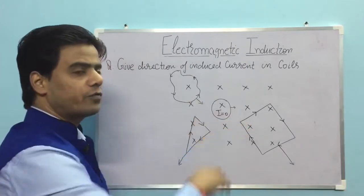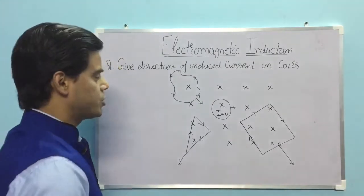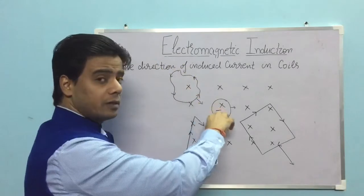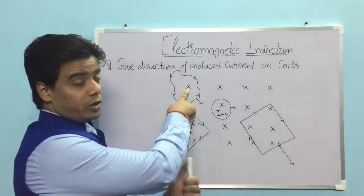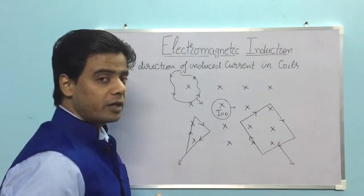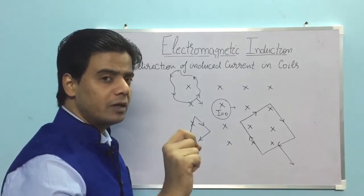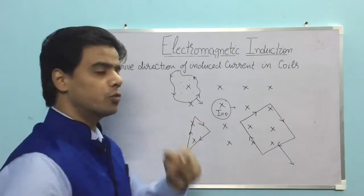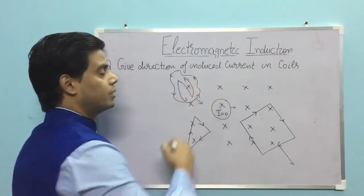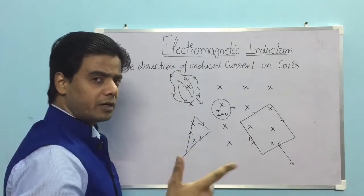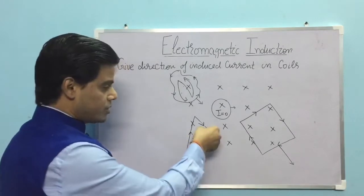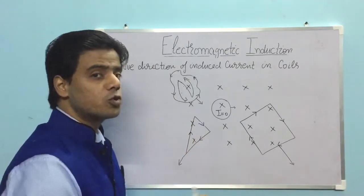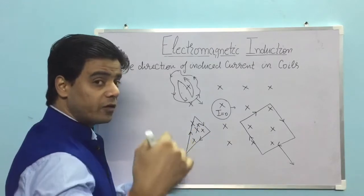Now determine the direction of induced current using Lenz's rule. For the coil moving into the crossed-field region, the cause is an increase in the crossed (into-page) magnetic field. To oppose this, the coil will try to create a dot (out-of-page) magnetic field. A dot field means field coming toward the observer, which corresponds to north polarity, and north polarity corresponds to anticlockwise current — matching what we got from Fleming's right-hand rule. For the triangular coil moving out, the cause is a decrement in the cross field, so it tries to increase crosses — meaning away from observer, clockwise current.